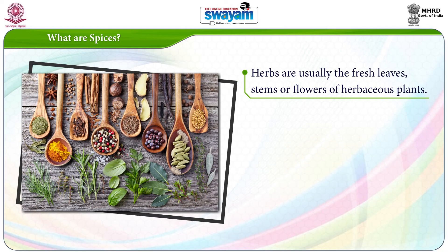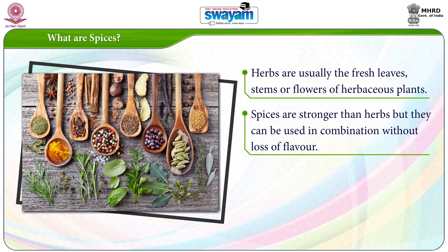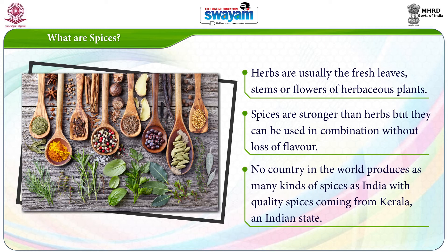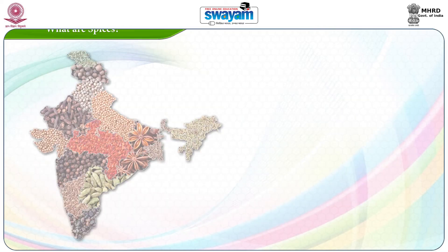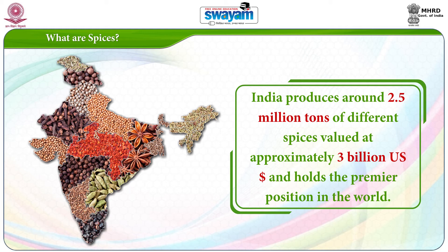Herbs are usually the fresh leaves, stems or flowers of herbaceous plants. Spices are stronger than herbs but they can be used in combination without loss of flavour. No country in the world produces as many kinds of spices as India, with quality spices coming from Kerala. At present India produces about 2.5 million tons of different spices valued at approximately 3 billion US dollars and holds the premier position in the world.